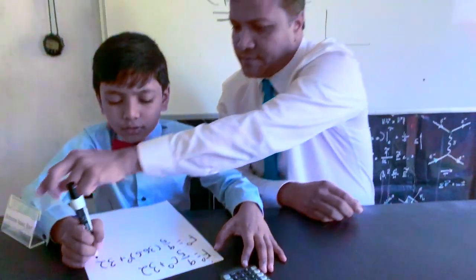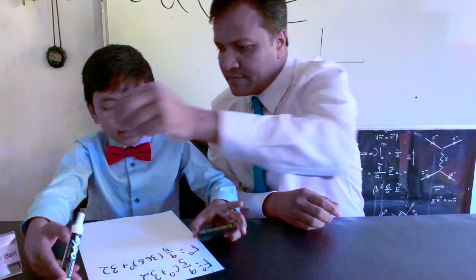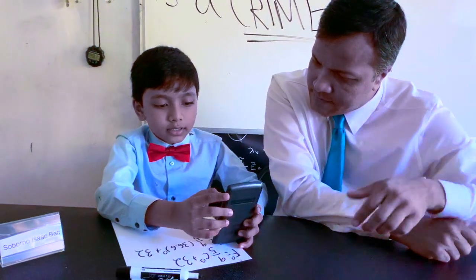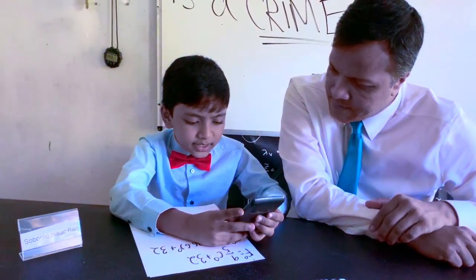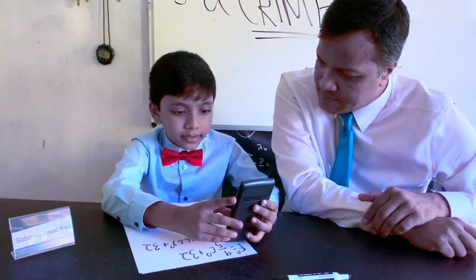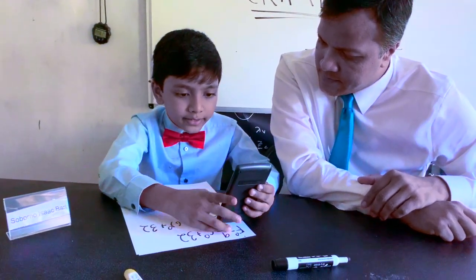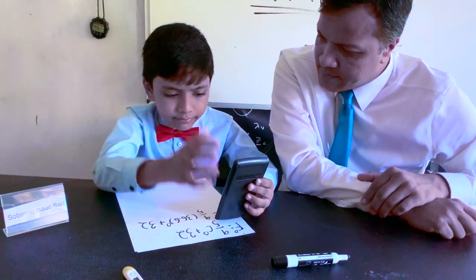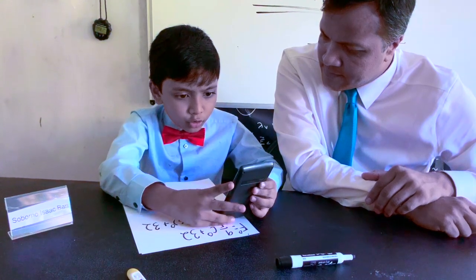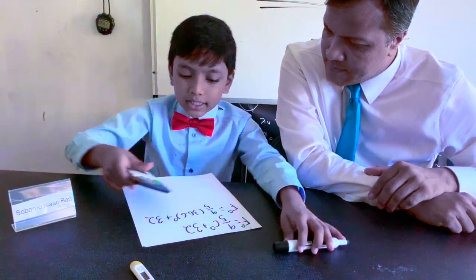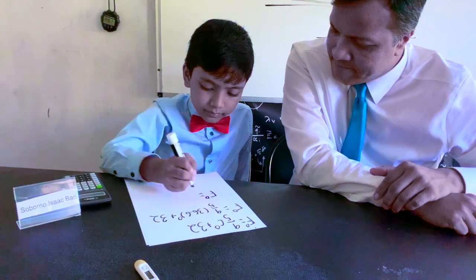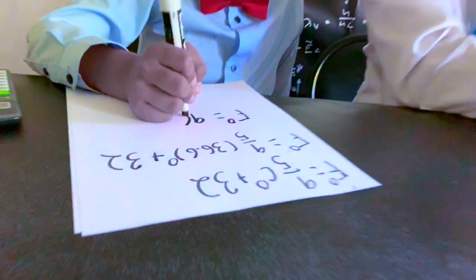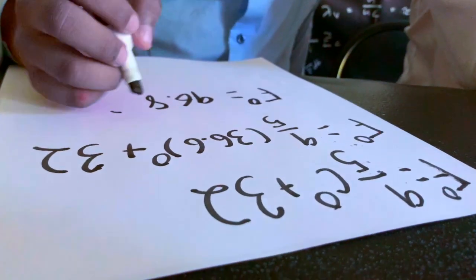And then we have to add 32 to that. So let me do this in the calculator. Nine times 36.6 gives me 329.4, divide that by five plus 32 — that's 96.88, which isn't abnormal but it's pretty close.